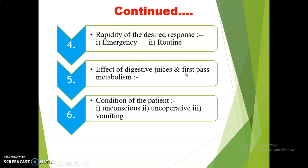The next factor is the effect of digestive juice and first pass metabolism. This is also an important factor during the selection of the route of drug administration. Some drugs get degraded by the enzymes of the digestive or gastric juices. As discussed earlier, insulin, an anti-diabetic drug, is not given by oral route because when it enters the stomach, the enzymes of gastric juice attack it and cause degradation. So there is no therapeutic value and no desired effect is produced, and such drugs are generally given by the parenteral route.